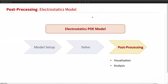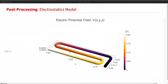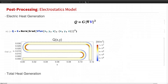Let's take a look at the results. We can visualize the electric potential field over the wire. At the left end it is held at 0.2 volts, and at the right end it is fixed at zero, which is what we expected. Based on the electric field V we solved for, we can calculate the electric heat generation, which is proportional to the square of the electric gradient. We can see the heat is generated most at the inner edge of the wire.